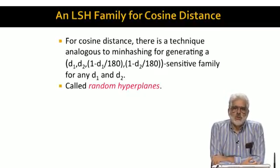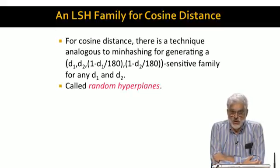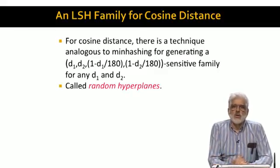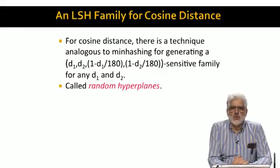Recall that the cosine distance between two vectors is the angle between them. As we are measuring angles in degrees, the value of a cosine distance is a number between 0 and 180, not between 0 and 1 as it was for Jaccard distance, or a number between 0 and infinity as it is for many other distance measures such as Euclidean. We're going to learn about an LSH family of hash functions that works for cosine distance.